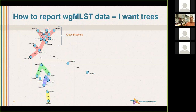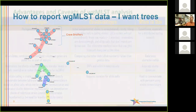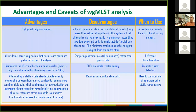They can basically look the same except that if you annotate the differences, you say allele differences versus SNP differences. So what are the relative advantages of the two methods? It's important for everyone to realize that whole genome MLST is where it's going to go.